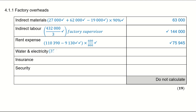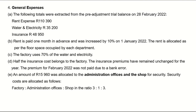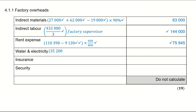For water and electricity, the factory uses 70% of the total. I take the total water and electricity expense of 35,200 and multiply it by 70% to get the factory's share. For insurance, it's sitting at 48,950.